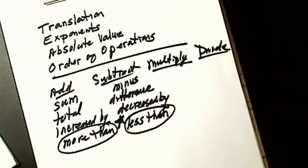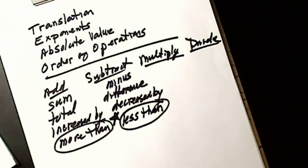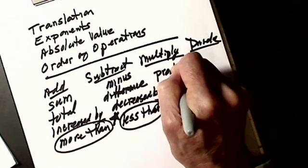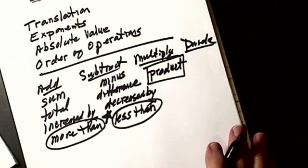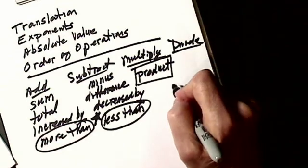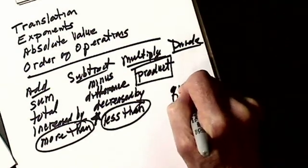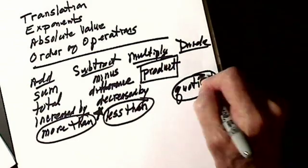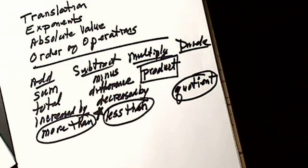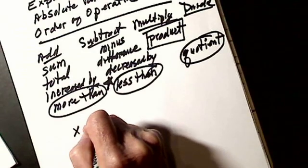For multiply: you have to know that if the question says 'find the product,' you can't go and divide — product means multiply. Then the answer to a division problem is called the quotient. So somebody might have forgot: the answer to a multiplication problem is called the product, and the answer to a division problem is called the quotient.